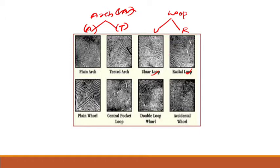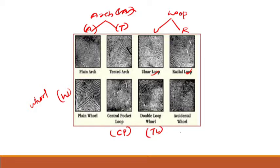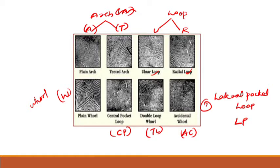Whorls are given the symbol W. Composites are subdivided like whorls: central pocket loop (CP), double whorl loop or twin loop (TL), accidental (AC), and lateral pocket loop (LP). This is the complete classification of fingerprint patterns.